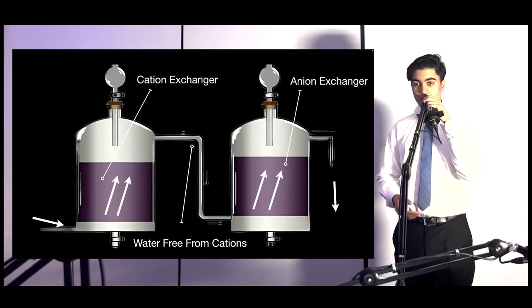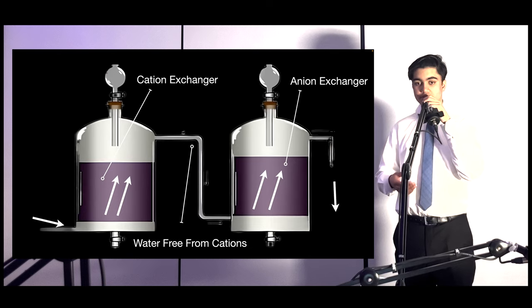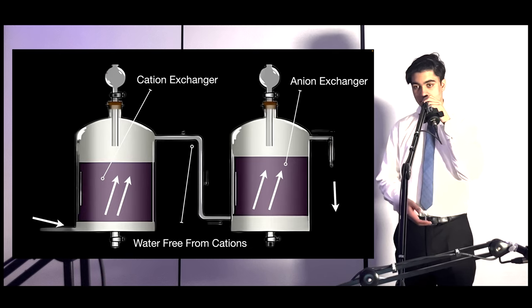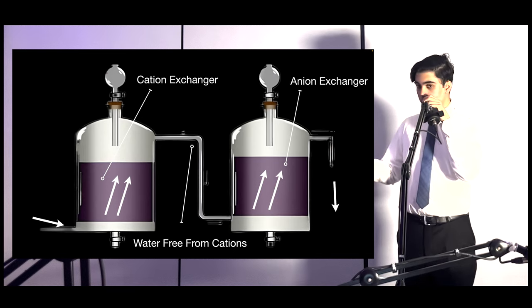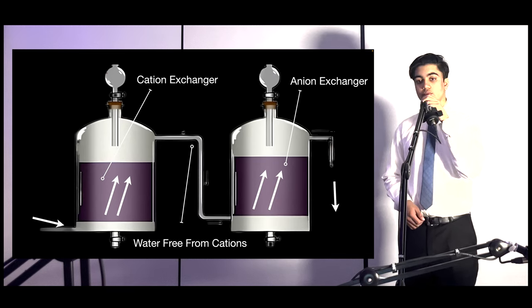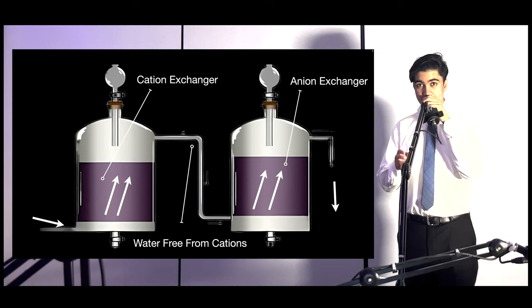Ion exchange systems, equipped with cation and anion exchangers, as well as a degasser, use resin beads to remove unwanted ions from water, ensuring purity and resource conservation. The arrows show how the water would flow through the system and release clean, demineralized water.